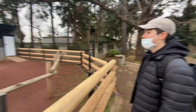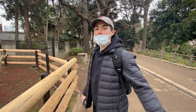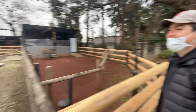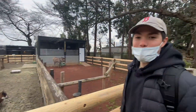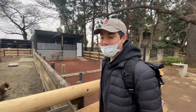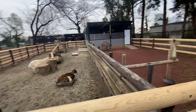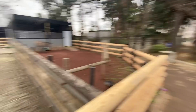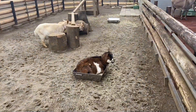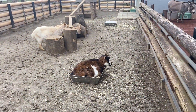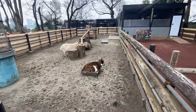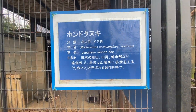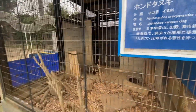We arrive somewhere in Kawasaki — 'where anything is possible for free.' Joking about how much the spot costs: zero, no money. There's a little animal there — wondering what a Japanese raccoon dog is.